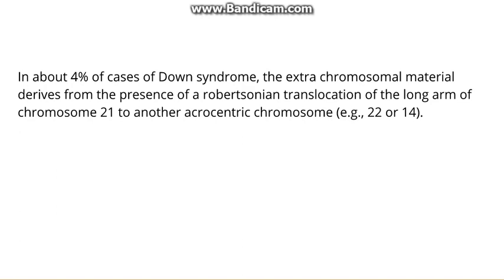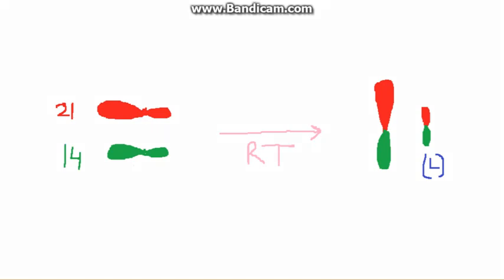Now going to the second part of Down syndrome, that is due to Robertsonian translocation. What is Robertsonian translocation? We will understand with the help of this picture. So if this is the 21st chromosome and this is the 14th chromosome, mostly the Robertsonian translocation for Down syndrome occurs between 21 or 14 chromosome, or sometimes 22nd chromosome can also be involved.